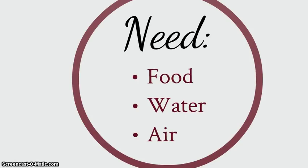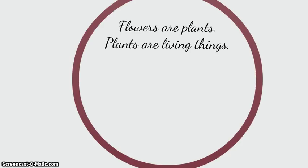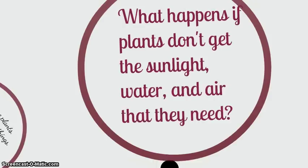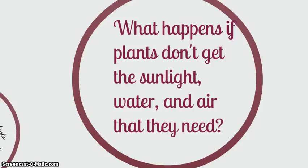Flowers are plants. Plants are living things. Plants need sunlight, water, and air to grow and change. What happens if plants don't get the sunlight, water, and air that they need? They will die.